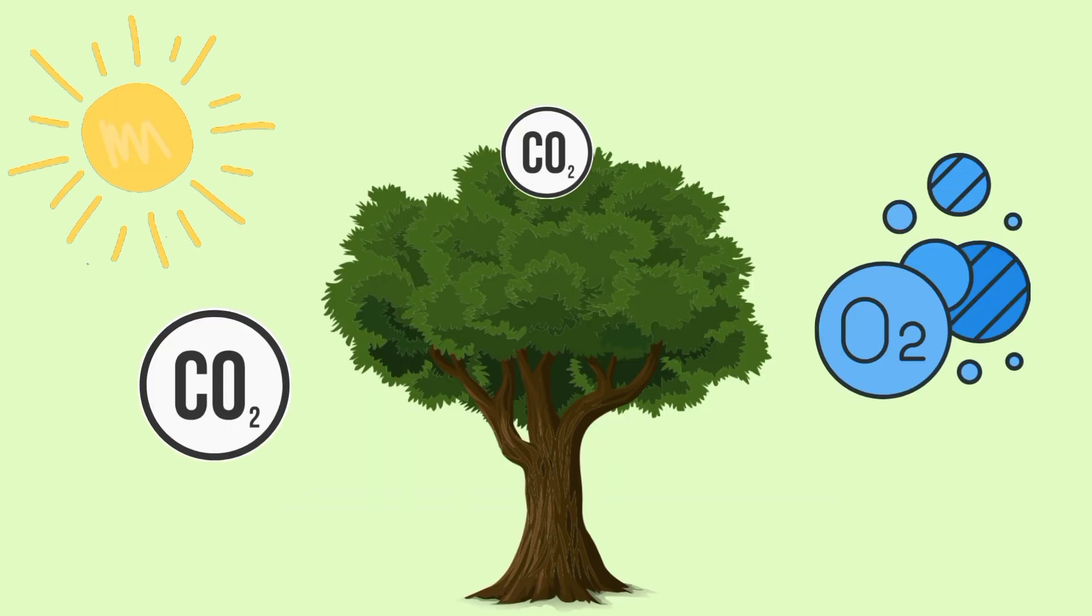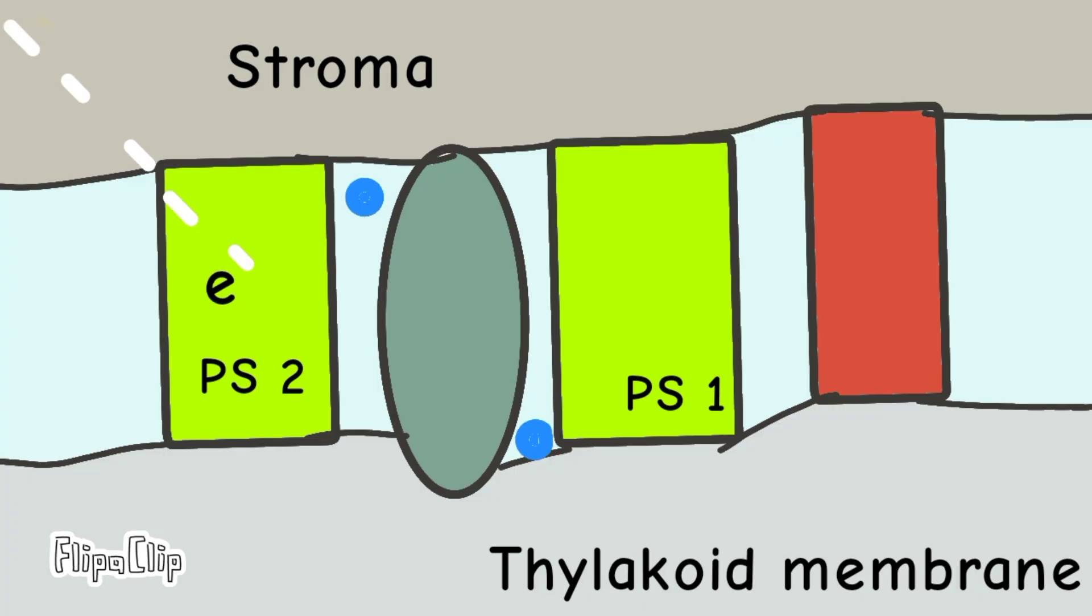Coming back to the process of photosynthesis, the light energy absorbed by chlorophyll excites the electrons in photosystem II to a higher energy state. They leave photosystem II and are transferred to the electron transport chain. As they move through the chain, they lose energy, which is used to pump the protons into the thylakoid membrane.